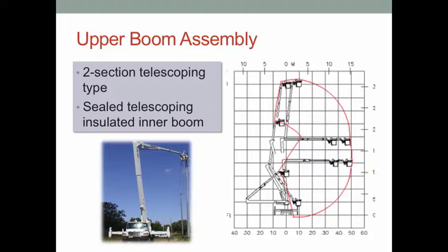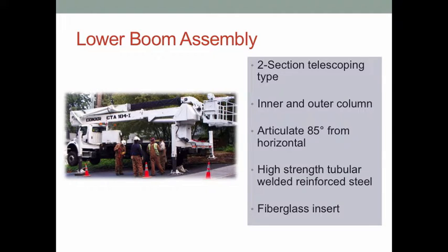All lift functions are controlled by microprocessors to provide smooth and dependable operation and safety. The lower boom is a two-section telescopic type consisting of an inner and outer column, which can articulate 85 degrees from the horizontal. The boom is constructed of high-strength tubular welded reinforced steel. A fiberglass insert provides maximum strength and rigidity.